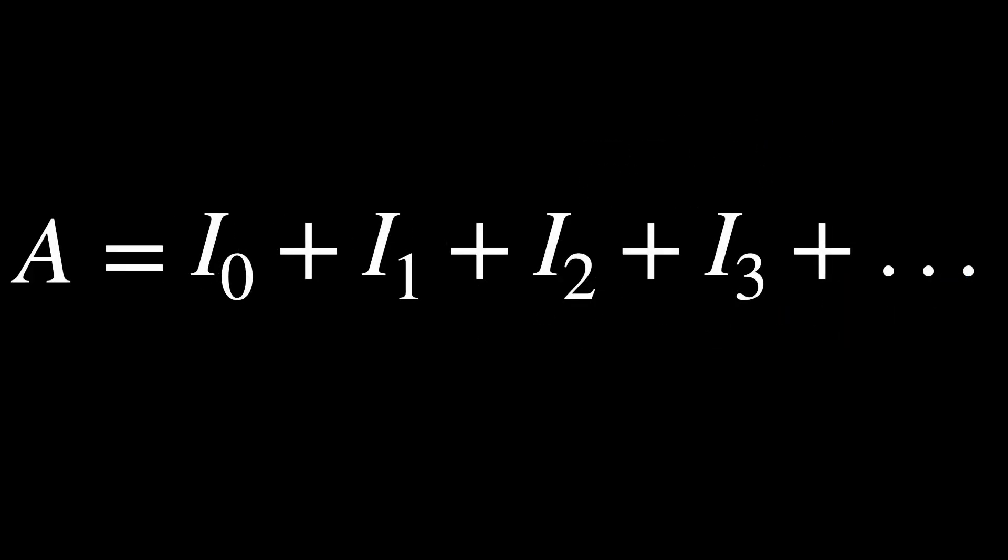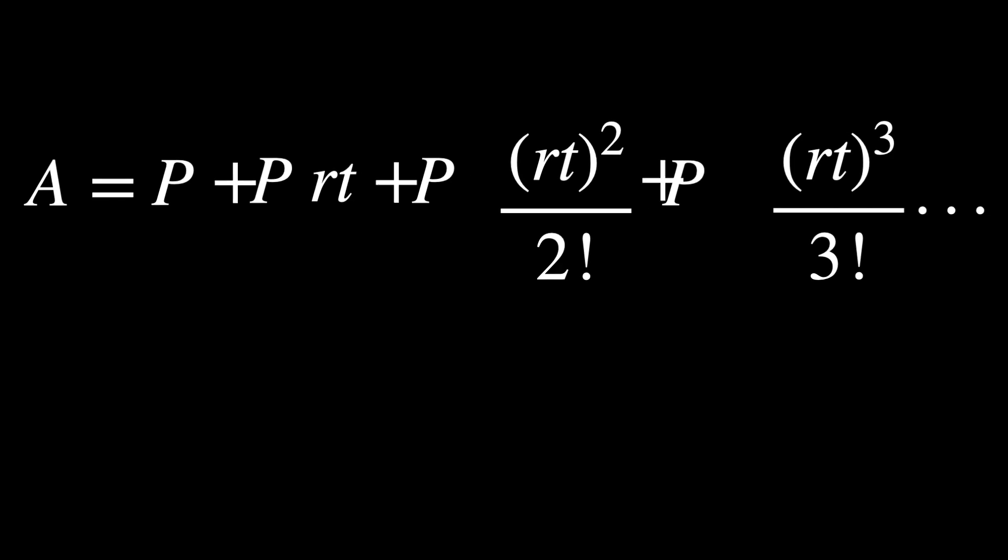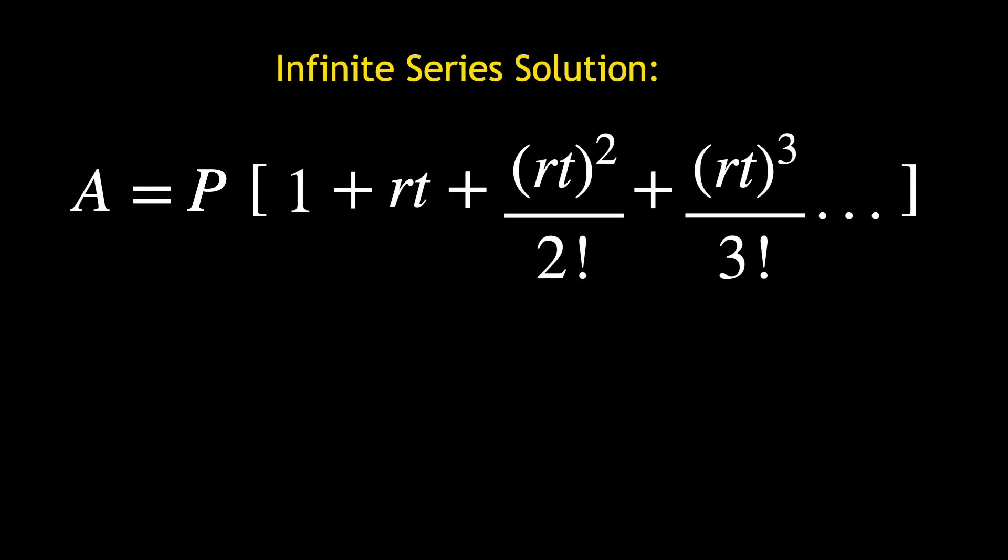Now we can finally write the entire amount in the account as an infinite sum of the various degrees of interest. Summing up all the interest terms, the total amount is given here. Let's replace the factorials and simplify, and finally we factor out the principle. We've now arrived at the infinite series solution to the problem.